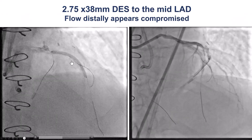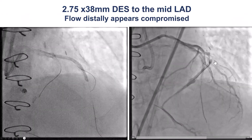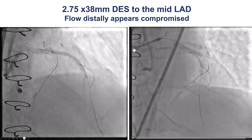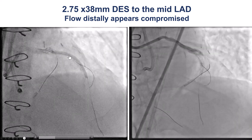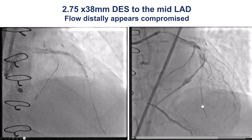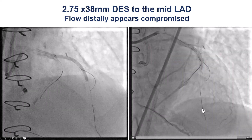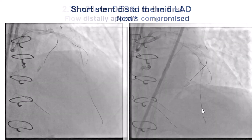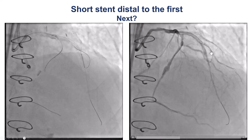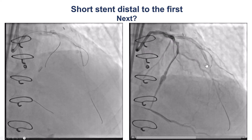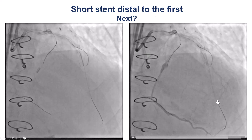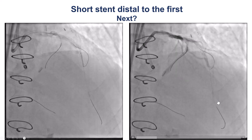We placed a stent in the circumflex. And then we decided to stent along the LAD CTO. The problem is, after we placed the stent, there was very poor flow distally. Maybe it was a distal dissection, so we placed another stent. But again, not very good — very poor flow into the distal LAD.